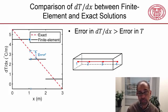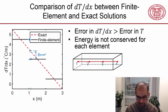And then, at the nodes, the derivative is discontinuous, which is a problem, but we can live with that problem. And from this, we can deduce that energy is not conserved for each element. And that's an important point.